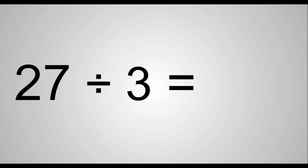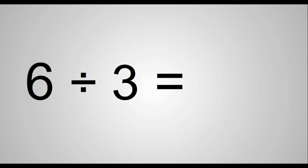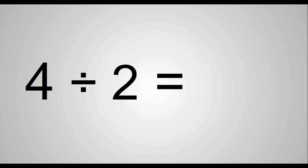25 divided by 5 equals 5. 27 divided by 3 equals 9. 26 divided by 5 equals 6. 6 divided by 3 equals 2. 4 divided by 2 equals 2.